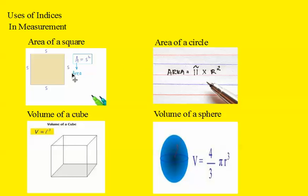Notice that for 2D shapes, two-dimensional shapes, the index is 2. For three-dimensional shapes, the index is 3. So there's a very simple use of indices that we've come across already.